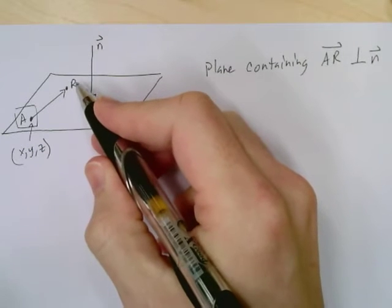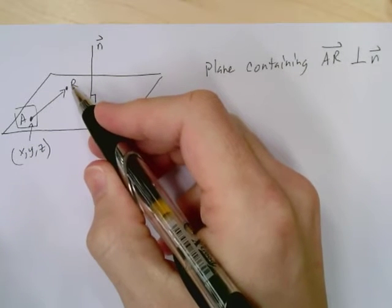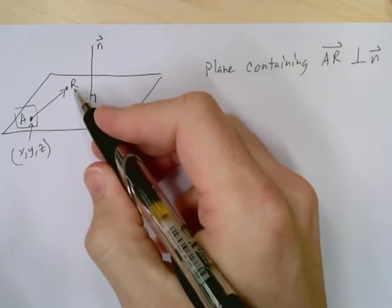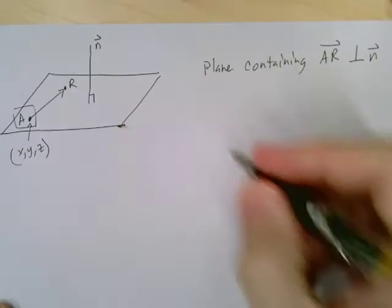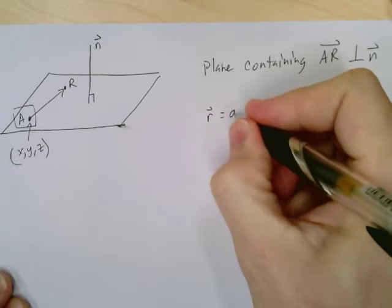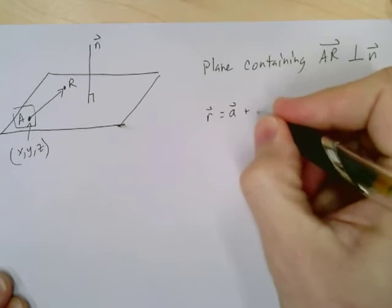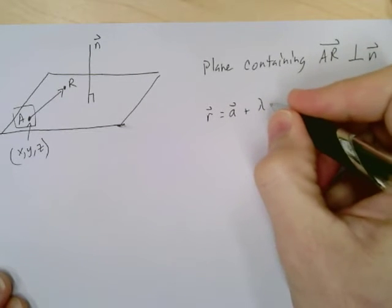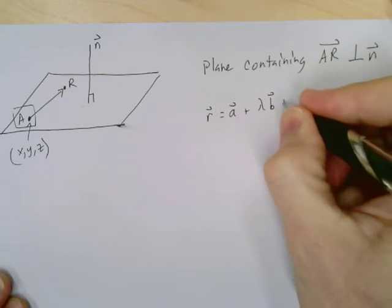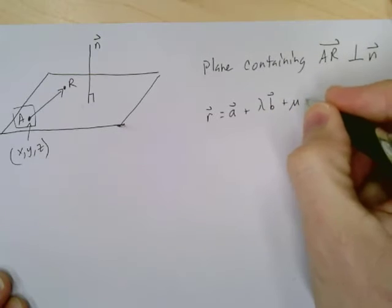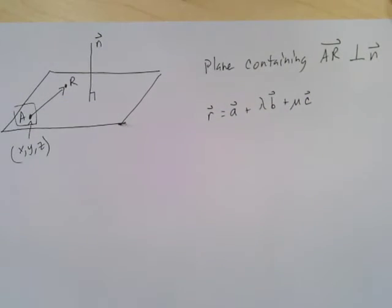R follows the vectors. Remember, in a past video we rewrote the equation R equals some point plus either lambda or alpha or whatever times B plus mu times C or whatever. The parameters don't matter.